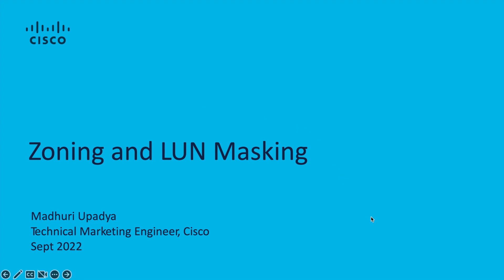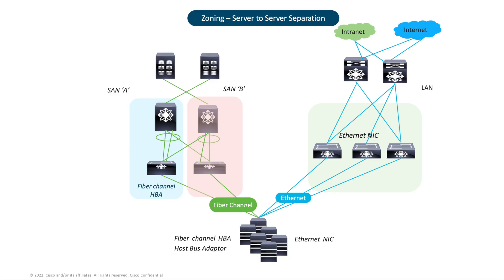Hello everyone, this is Madhri Upadia. Today we are going to discuss zoning and LUN masking. The first thing we are going to discuss is Fiber Channel zoning. Zoning is configured on Fiber Channel switches and it controls which hosts are allowed to communicate over a Fiber Channel network.